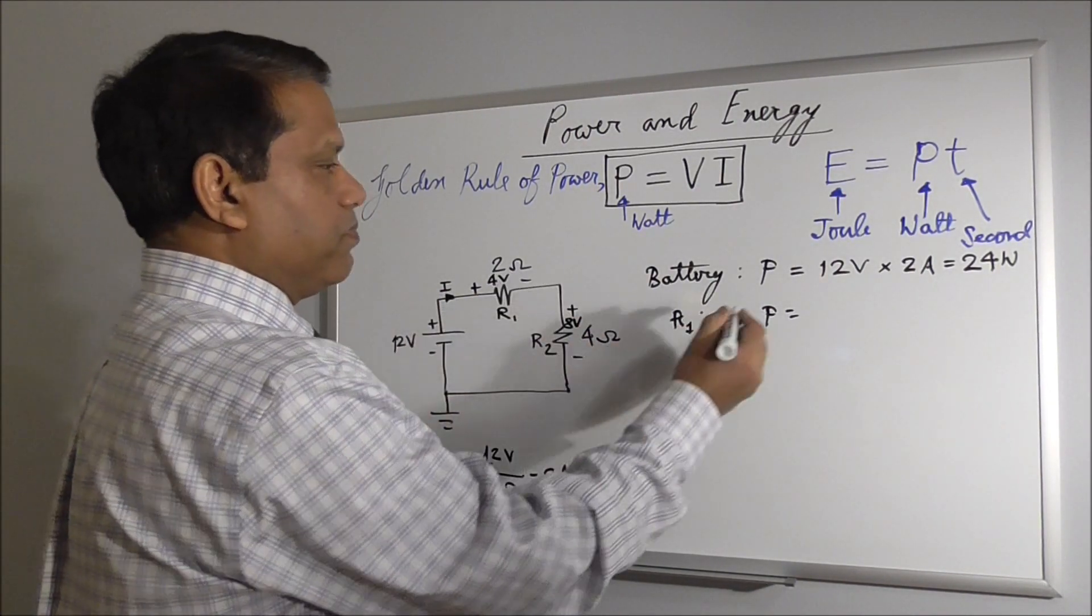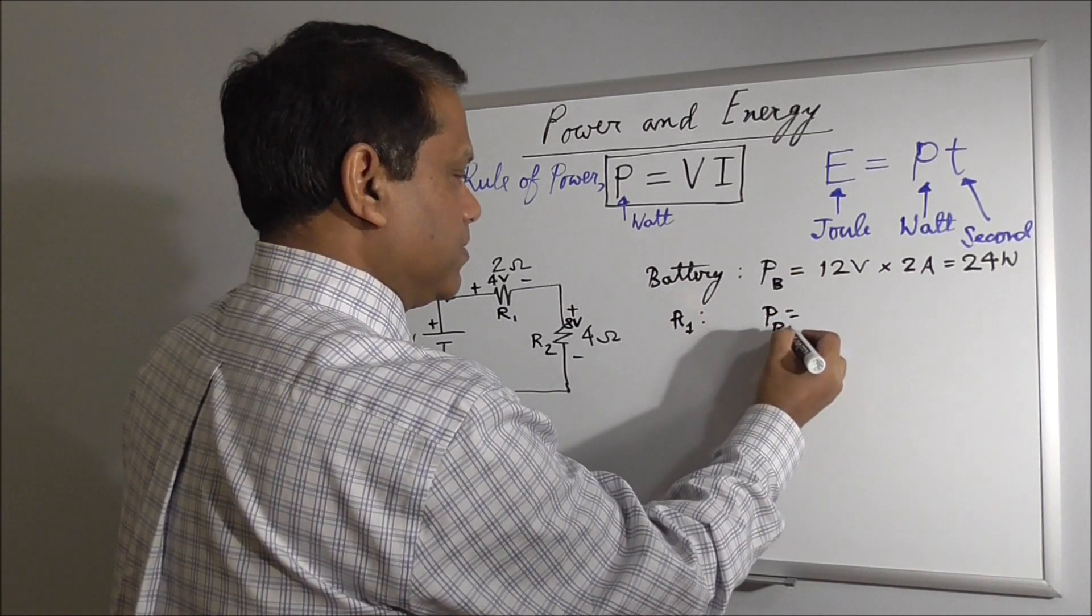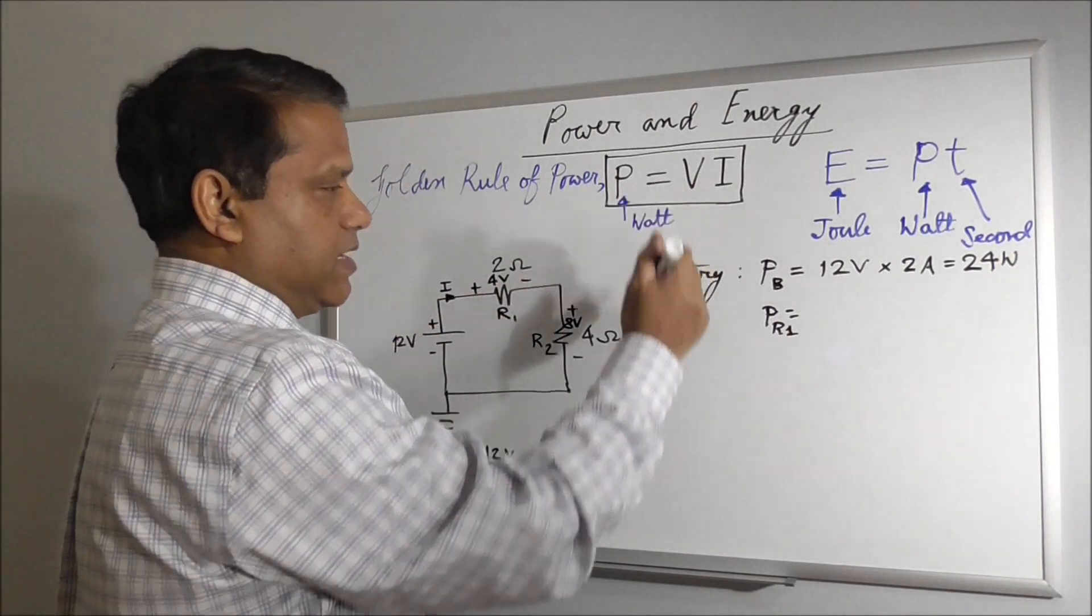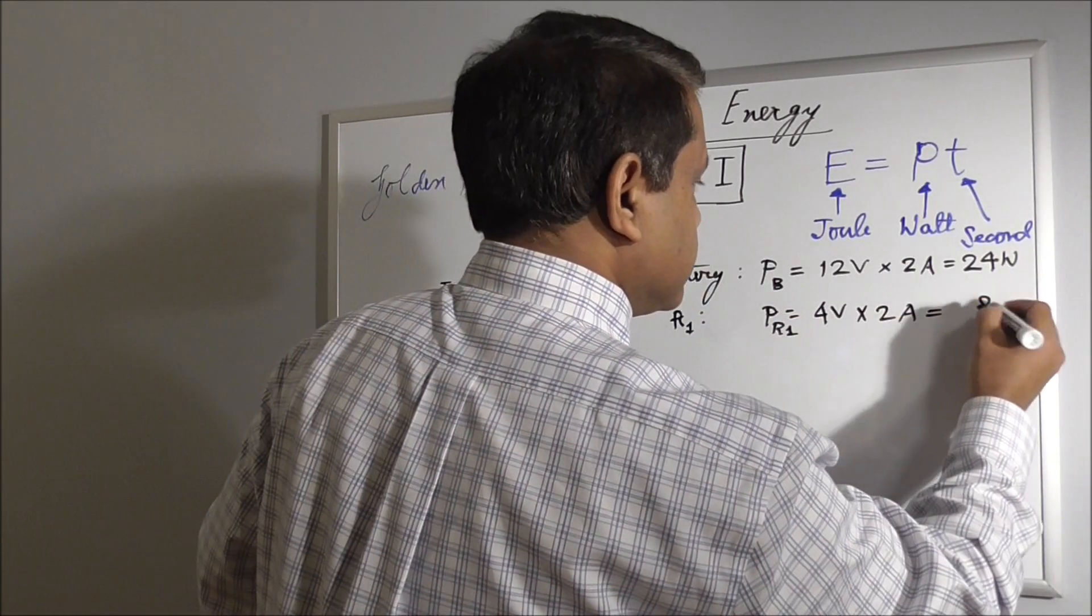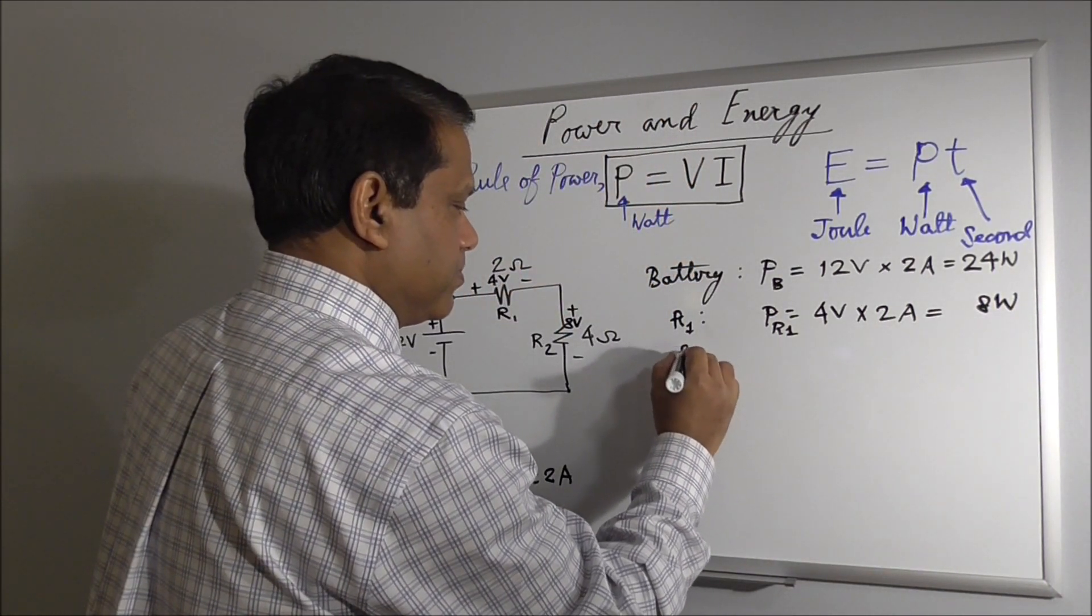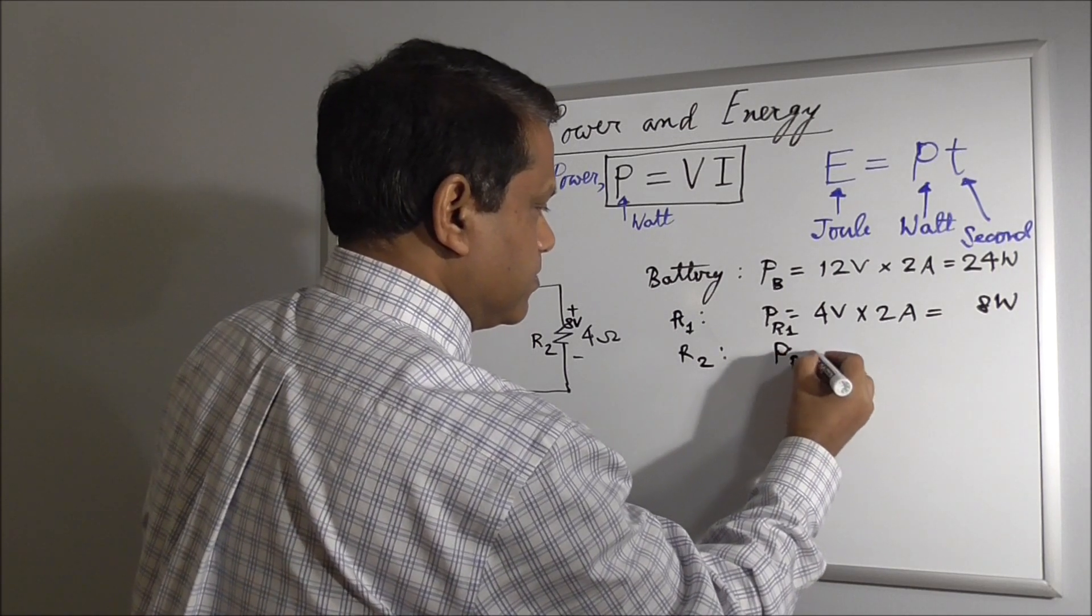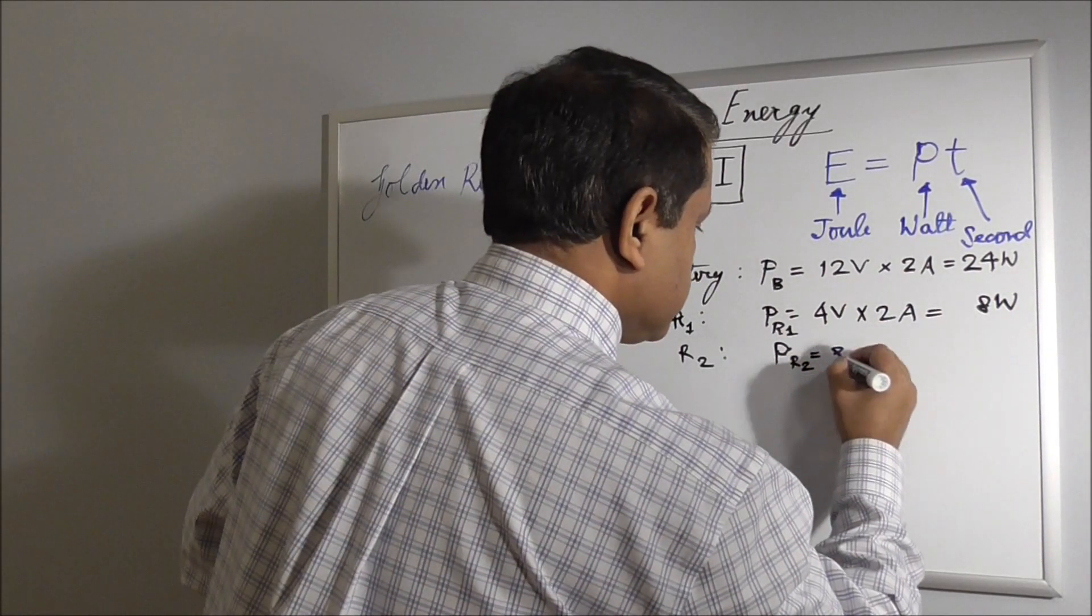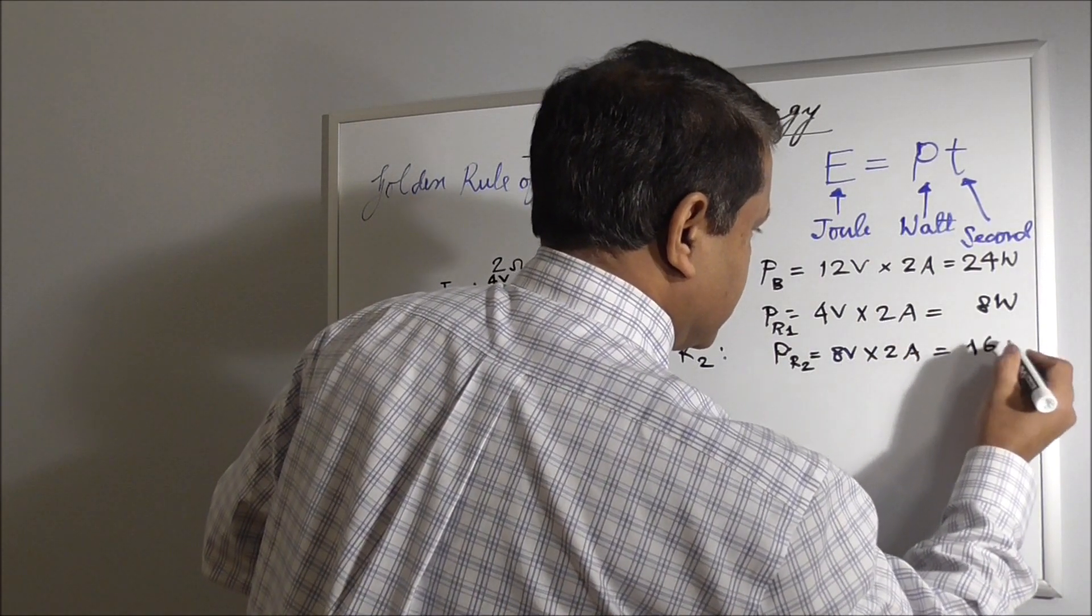So this part, the P battery, and this is PR1, is 4 volt times 2 ampere, V times I, 8 watt. And for R2, PR2 is 8 volt times 2 ampere, 16 watt.